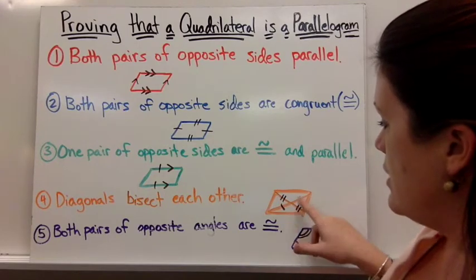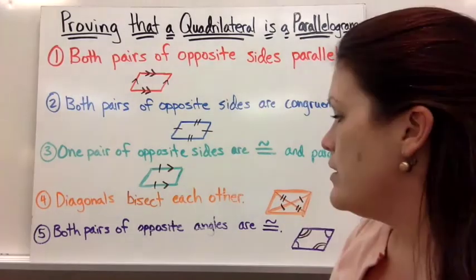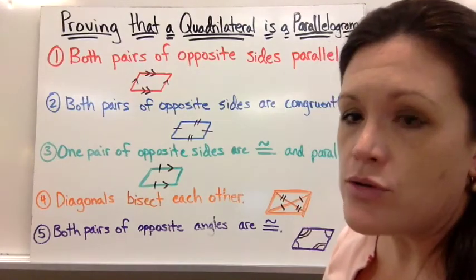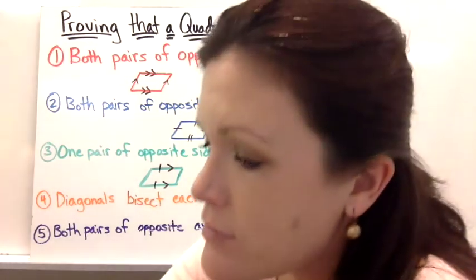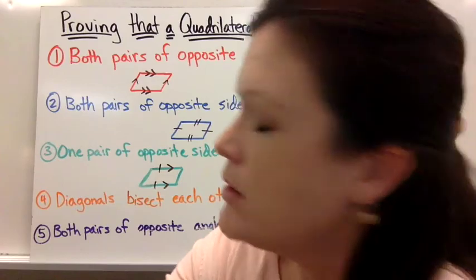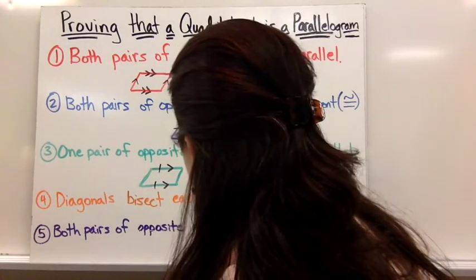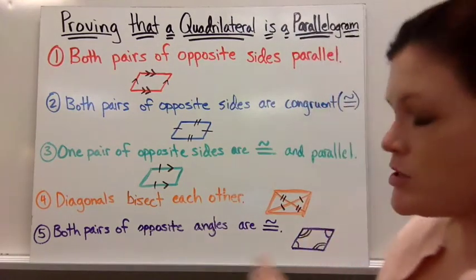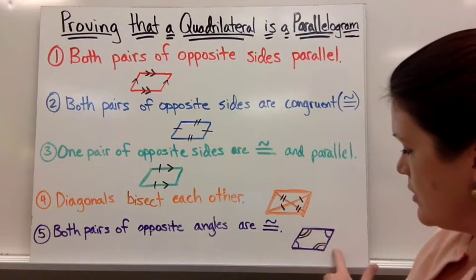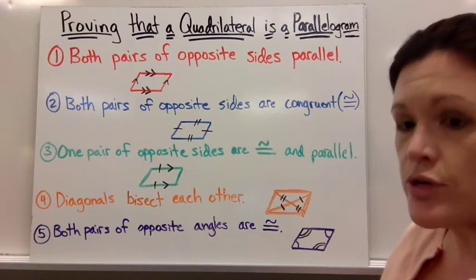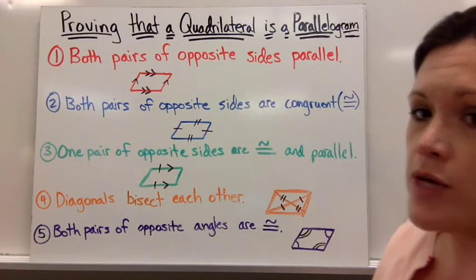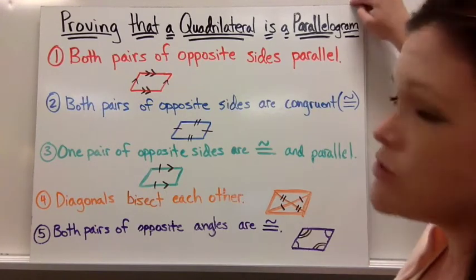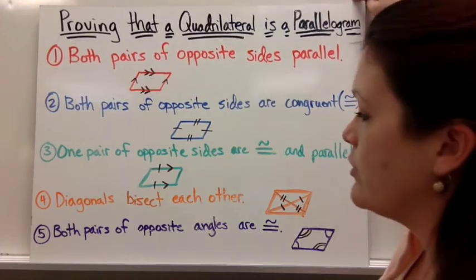So those are equal and then those two would be equal. And then both pairs of opposite angles are congruent. Both pairs of opposite angles are congruent. So if they indicate that those angles are congruent or if you can prove that they're congruent, then you can conclude that the quadrilateral is more specifically a parallelogram.